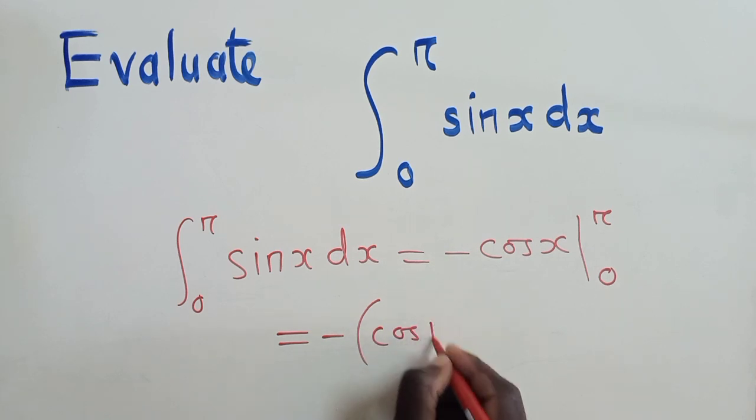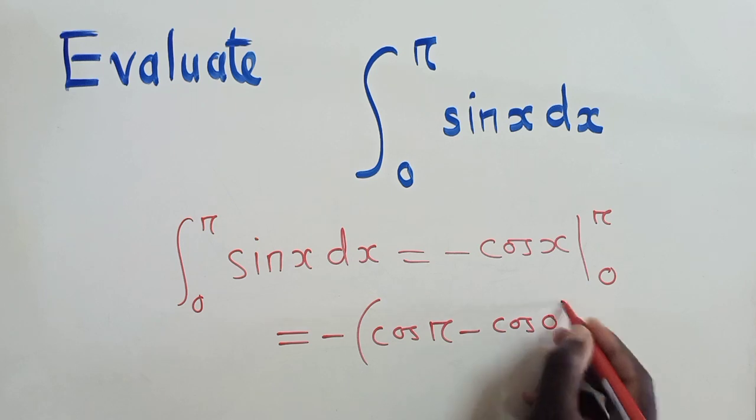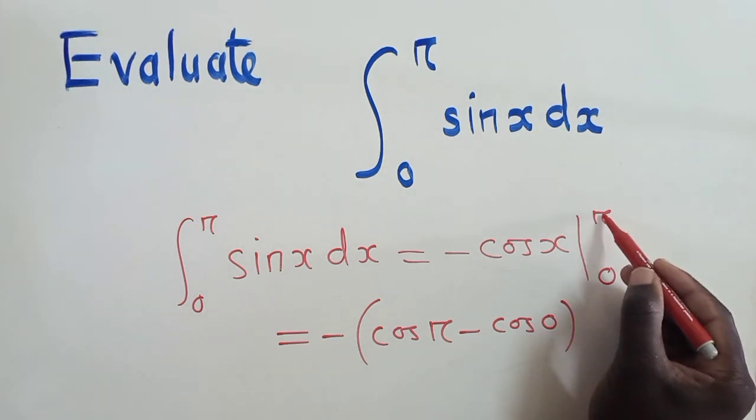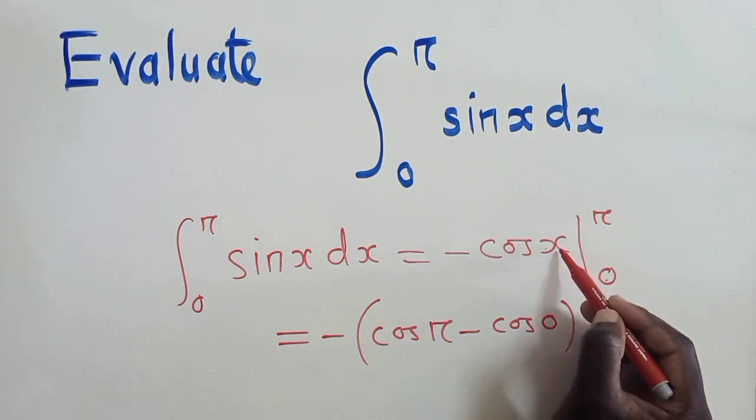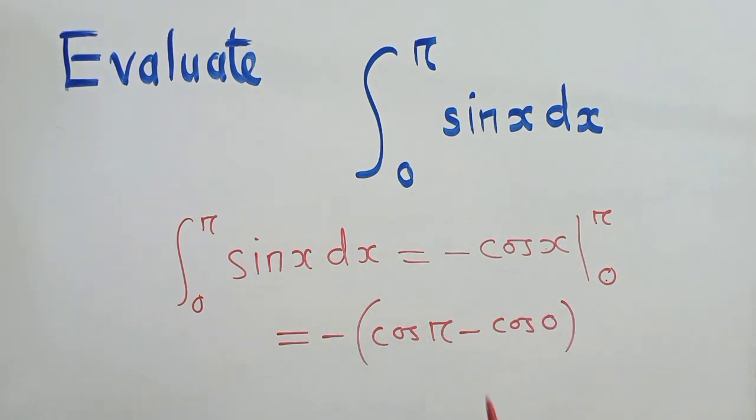We have cos pi here minus cos 0. So you just substitute this pi right here and a 0 right here. And this is what we are going to have.